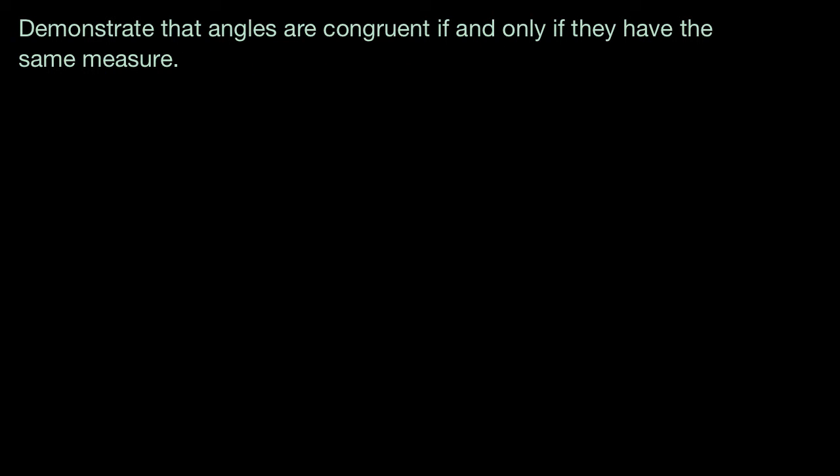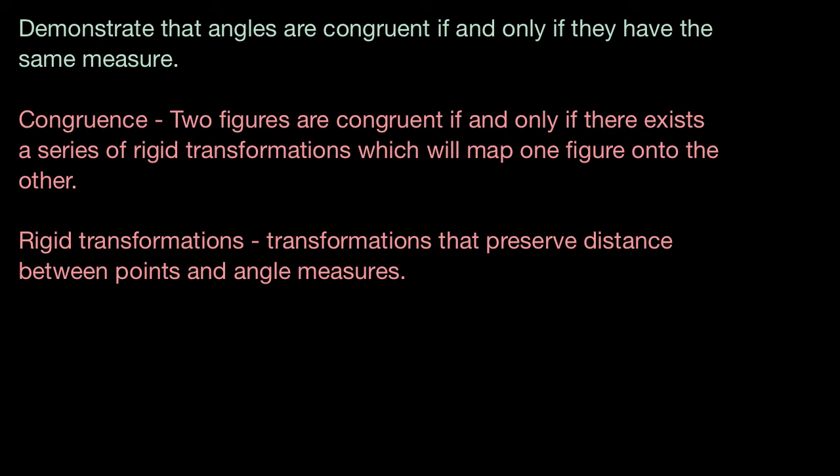For our definition of congruence, we will use the rigid transformation definition, which tells us two figures are congruent if and only if there exists a series of rigid transformations which will map one figure onto the other. What are rigid transformations? Those are transformations that preserve distance between points and angle measures.